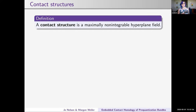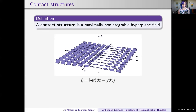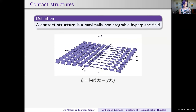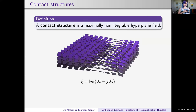A contact structure is going to be a maximally non-integrable hyperplane field, which means that you don't have a codimension one foliation. As an example, here's a picture of the kernel of dz minus y dx in the z equals zero plane. When y is zero, you have an array of flat planes, and then as you increase y, you have this twisting. You could find codimension two submanifolds—dimension one submanifolds—but you couldn't find a two-dimensional surface whose tangent planes would give you this kernel of this form.